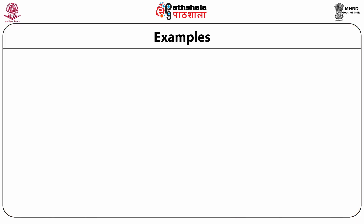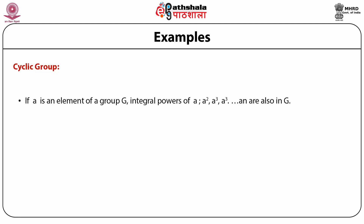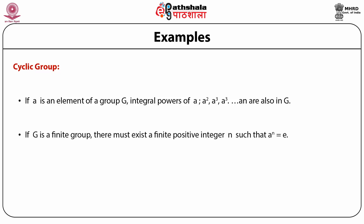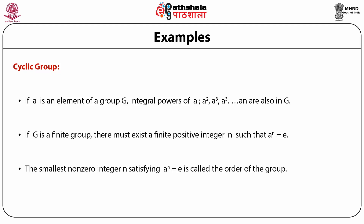We will now define some specific groups. The first is the cyclic group. If a is an element of a group G, then integral powers of a — namely a², a³, a⁴, aⁿ — are also in G. If G is a finite group, there must exist a finite positive integer n such that aⁿ = e. The smallest non-zero integer n satisfying aⁿ = e is called the order of the element.